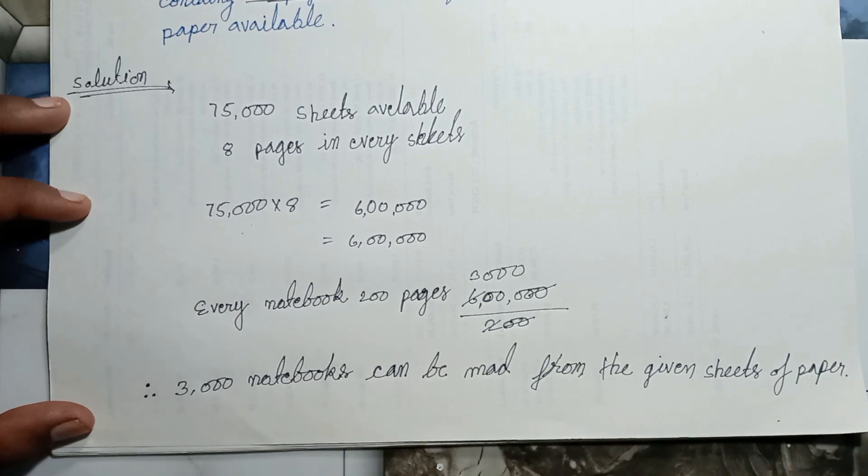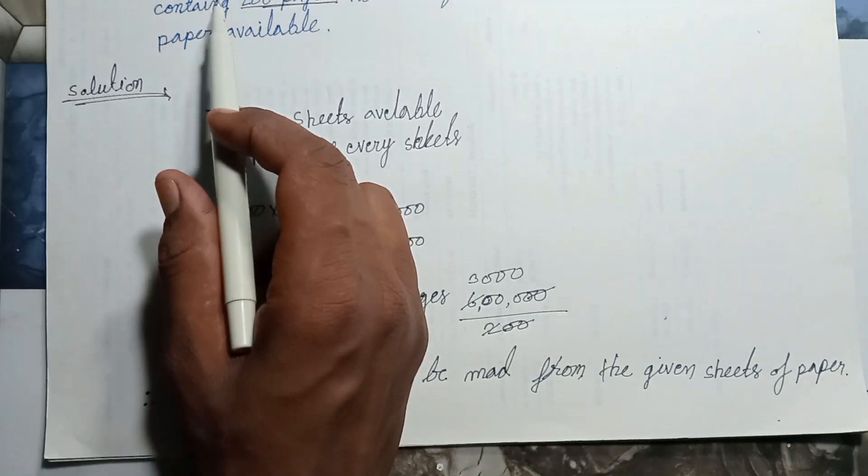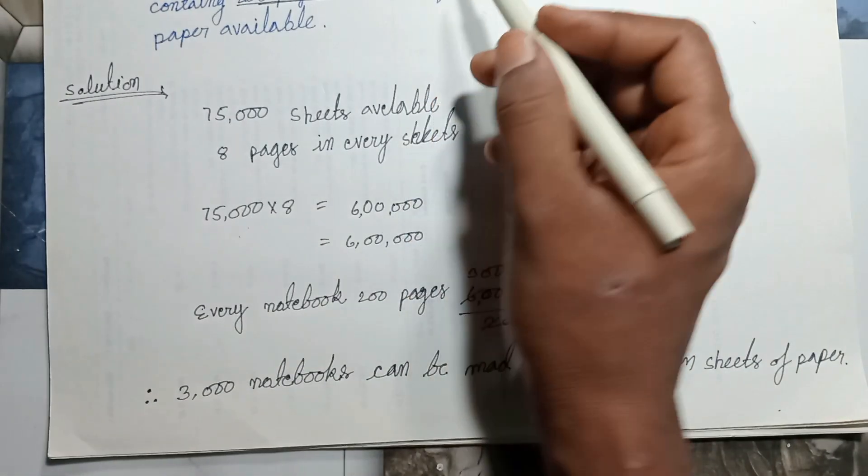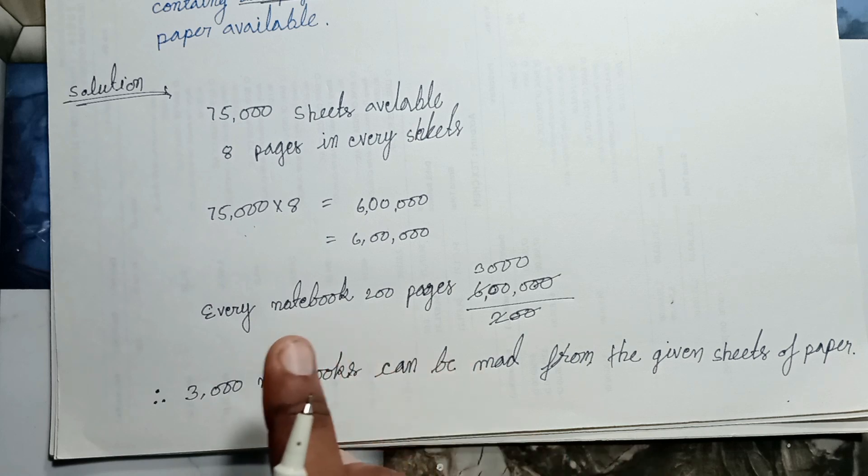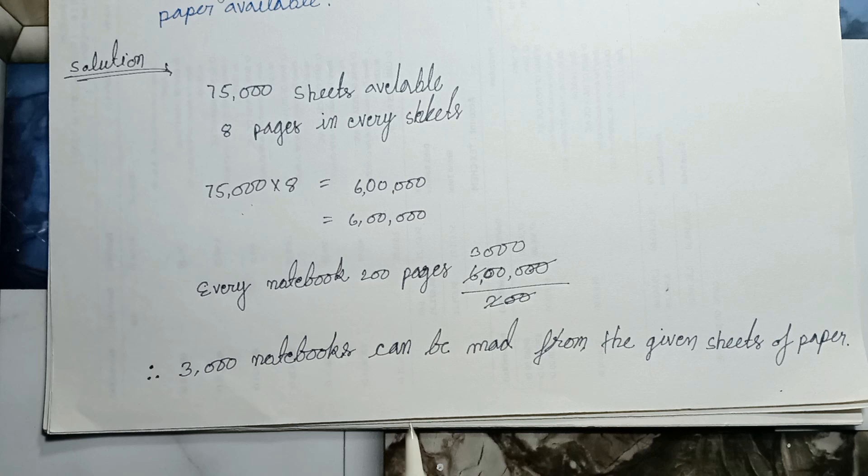To summarize: 75,000 sheets available, every sheet has 8 pages, total 6 lakh pages. Every book has 200 pages. How many notebooks? Total 3,000 notebooks made from the given sheets and given pages.